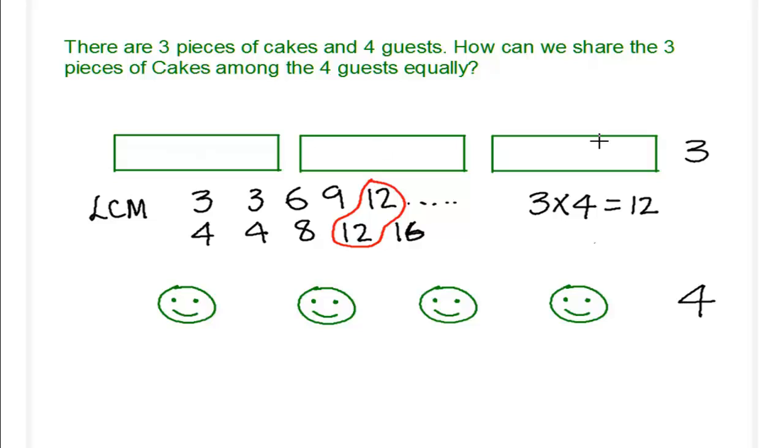So we divided the cakes into 12 pieces and we gave each of the four guests three pieces. And thus we have divided three pieces of cakes equally among four guests.